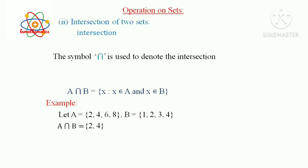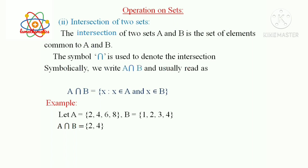Then we can define what is Intersection. The intersection of two sets Capital A and Capital B is the set of elements common to Capital A and Capital B. Symbolically, we write A ∩ B and usually read as A intersection B.